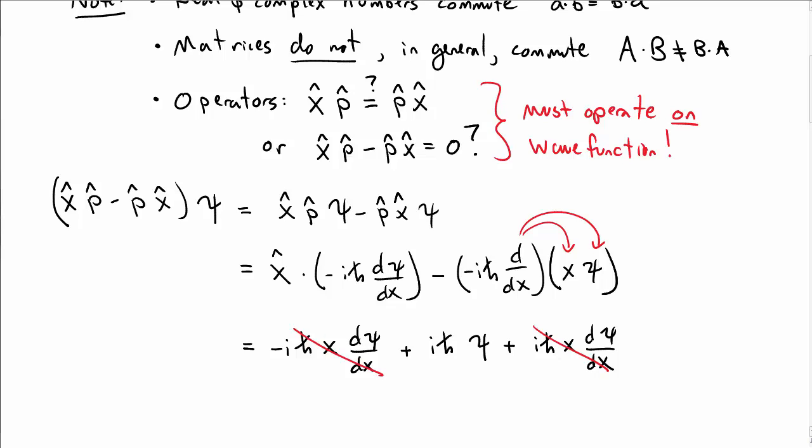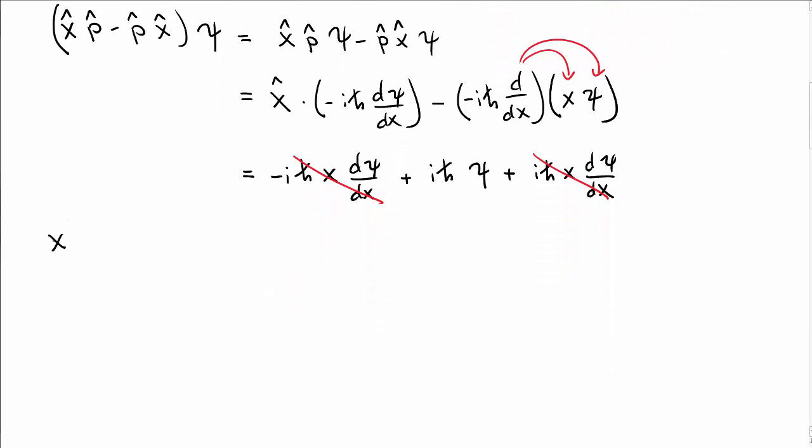So the first and the last terms cancel, and I'm left over with this extra term, this i h-bar psi. So x-hat p-hat minus p-hat x-hat psi is i h-bar psi.